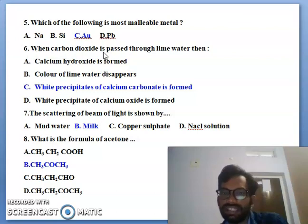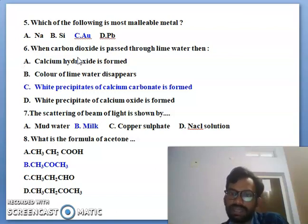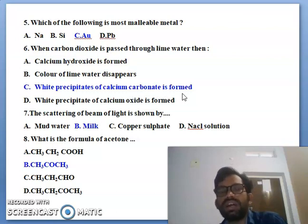And sixth one is when carbon dioxide is passed through the lime water then: calcium hydroxide is formed, color of limestone disappears, white precipitate of calcium carbonate is formed. So when carbon dioxide is passed through lime water then it is called white precipitate of calcium carbonate is formed. Calcium carbonate is formed is the correct answer.